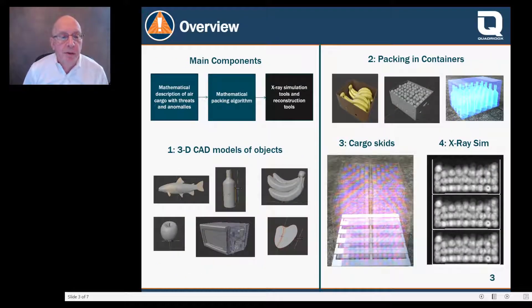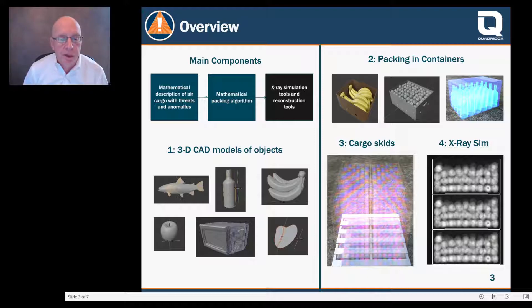The main components are shown in the upper left of the slide. We're creating the mathematical description of air cargo and threats with anomalies. We're able to pack them in boxes and then onto skids with a mathematical packing tool, and then feed this into extant x-ray simulation tools. If we want to do CT, we can put it into reconstruction software. The bottom left shows typical objects we can create, the top right shows them packed into boxes, and the bottom right shows we can generate x-ray projections — in this case, it's a box of apples.